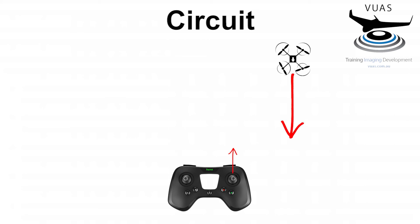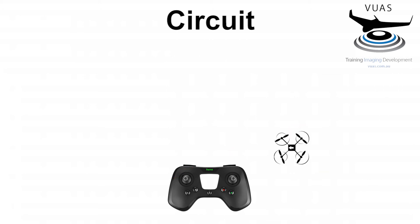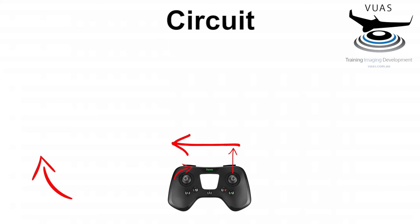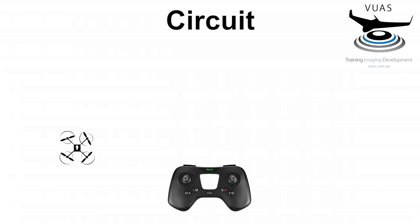As we continue to pitch forward and come to the next corner, we again add yaw to turn 90 degrees and we'll be facing ourselves. If we then continue to pitch forward we'll come towards ourselves. We then use our left thumb once more to yaw right, turning to head from right to left, and continue forward until we reach our original starting position, then yaw with our left thumb one more time to stop and hover where we began.